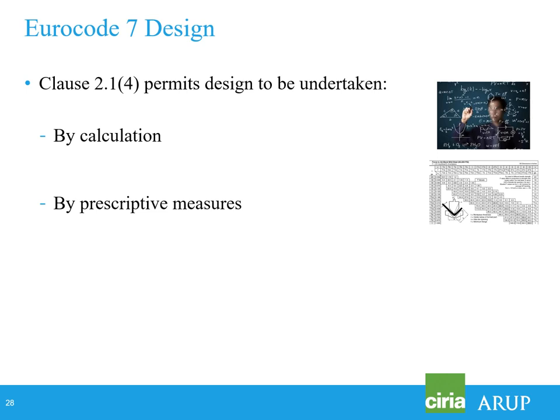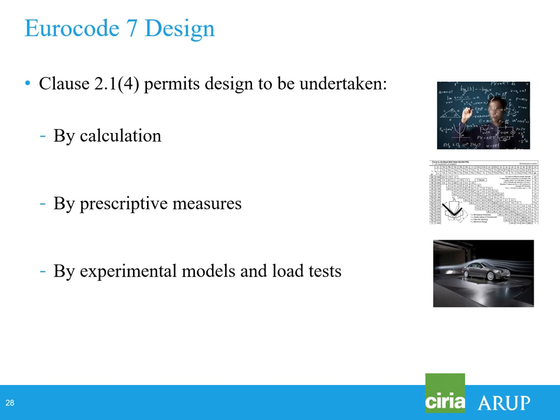EC7 also allows prescriptive measures — essentially looking up things in a table, using conservative relationships for very simple structures, not commonly allowed for category 2 or 3 structures. Experimental models and load tests have a large part to play in foundation design but not so much in embedded retaining walls. The fourth option is the observational method — people's perception is that it's higher risk, slightly dubious, and should be approached with caution. That's one of the things we really want to debunk.